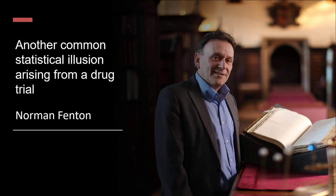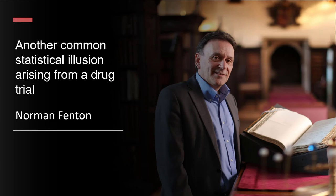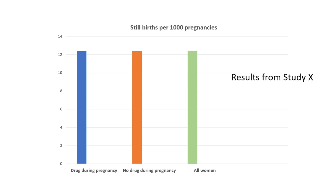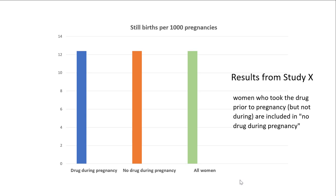This example is inspired by a real recent study, but because of YouTube censorship rules I can't say what it was about — people can find out from my Twitter feed and blog. The study attempted to determine if there was an increased risk of stillbirth for pregnant women who took the drug. The results showed very similar stillbirth rates for those who did and didn't take the drug during pregnancy, but the drug was also taken shortly before pregnancy by many women in the study, and women who took the drug prior to pregnancy but not during it are included in the 'no drug during pregnancy' category.